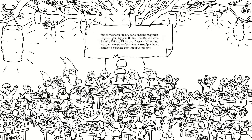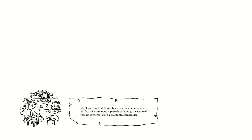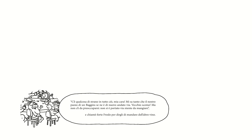Seguì un silenzio di tomba, fino al momento in cui, dopo qualche profondo respiro, ogni Baggins, Boffin, Tuc, Brandybuck, Scaveri, Paffuti, Rintanati, Bolgeri, Serracinta, Tassi, Buoncorpo, Soffiotrombe, Tronfipiede incominciò a parlare contemporaneamente. Erano tutti scandalizzati dal cattivo gusto dello scherzo e decisero che bisognava bere e mangiare in abbondanza per guarire dallo shock. Ma il vecchio Rori Brandibuc non era tanto sicuro: né l'età né tantomeno il pasto luculliano gli avevano offuscato la mente. C'è qualcosa di strano in tutto ciò, mia cara, mi sa tanto che il nostro pazzo di Baggins se n'è di nuovo andato via. E chiamò forte Frodo per dirgli di mandare dell'altro vino.